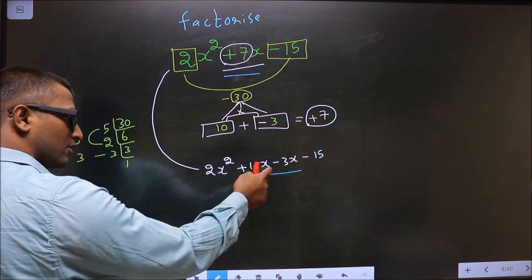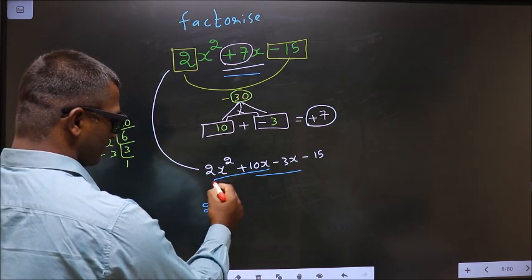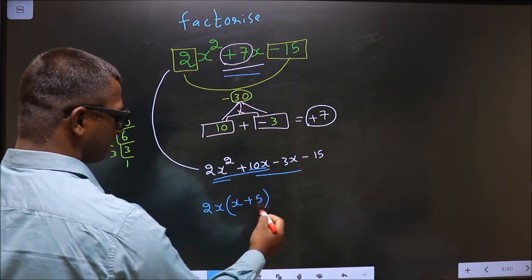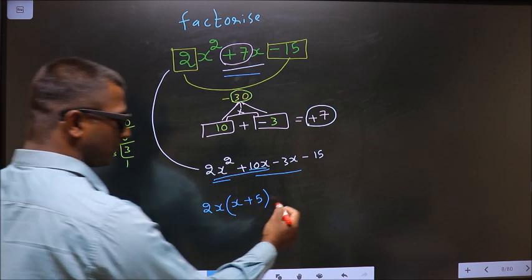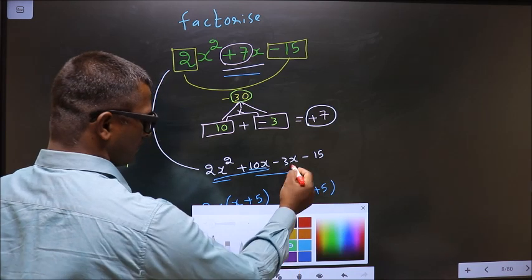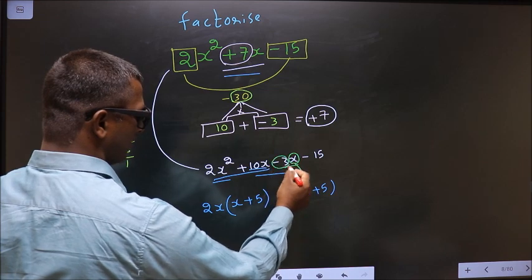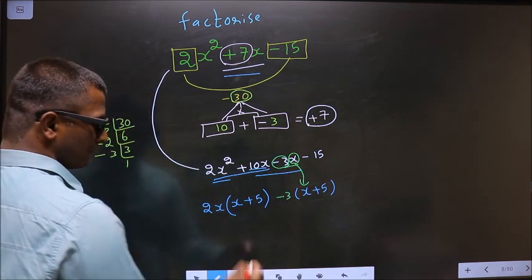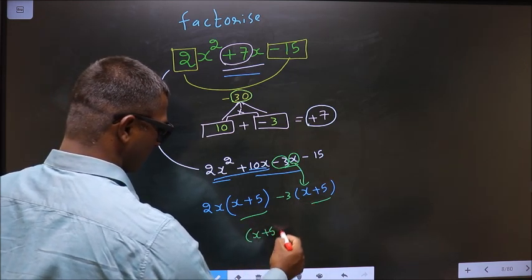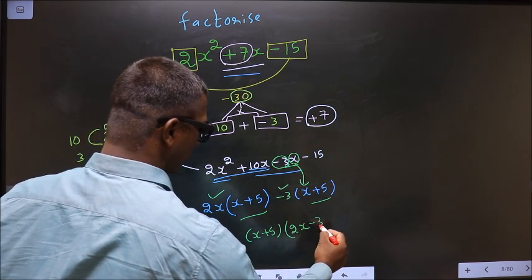Now what can you take out common from these two terms is 2x. So here you will be left with x and here you are left with 5. Here you got x plus 5 means here also you should get x plus 5. Now from this x has gone inside, so outside you are left with minus 3. Now you take x plus 5 common. So here you are left with 2x and here you are left with minus 3.